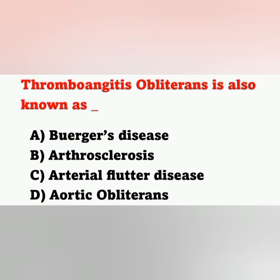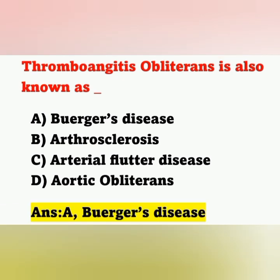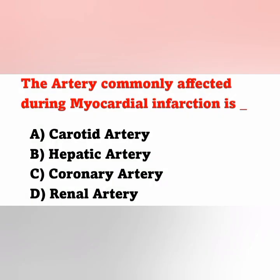Next question: Thromboangitis obliterans is also known as? Options: option A Buerger's disease, option B atherosclerosis, option C arterial flutter disease, option D aortic obliterans. The correct answer is option A, Buerger's disease. Thromboangitis obliterans or Buerger's disease is a chronic inflammatory vascular occlusive disorder mainly of peripheral small and medium-sized arteries of the extremities. Due to this occlusion, blood supply decreases to the legs and feet, which may cause gangrene of the toes and intermittent claudication.